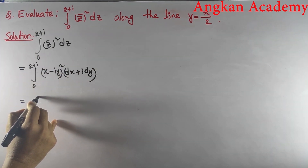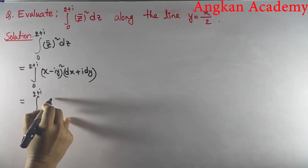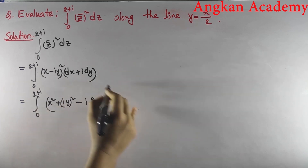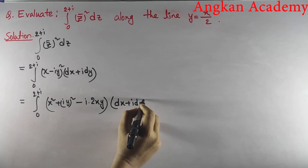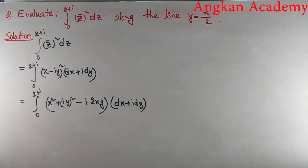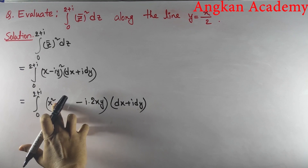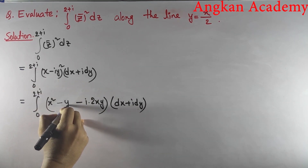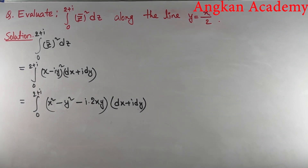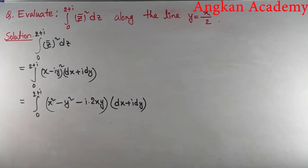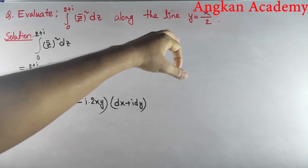Substituting, the integral from 0 to 2+i becomes the integral of (x − iy)² times (dx + i dy). Expanding (x − iy)² gives x² − y² − 2ixy, and since i² = −1 we get minus y² term. The whole expression is in terms of x and y, but we need to convert it into one variable. We are given the line y = x/2.